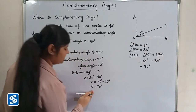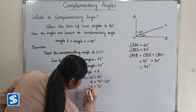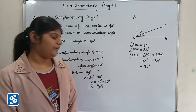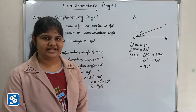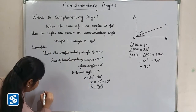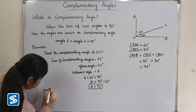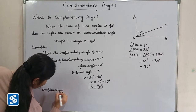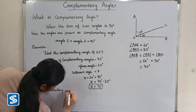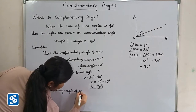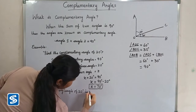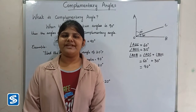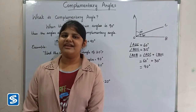So x is equal to 90 degrees minus 20 degrees, which gives x equal to 70 degrees. So the complementary angle of 20 degrees is 70 degrees. To find the complementary angle of a given angle, we just subtract the given angle from 90 degrees.